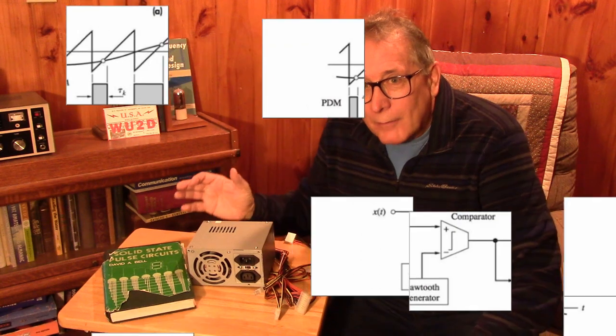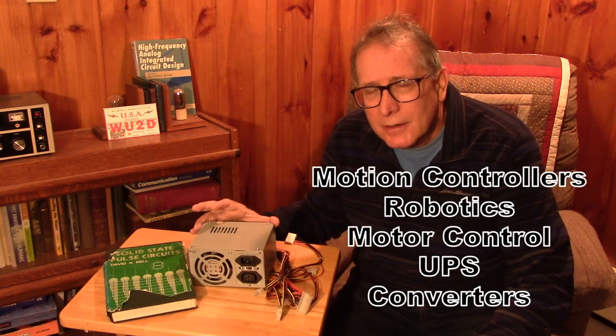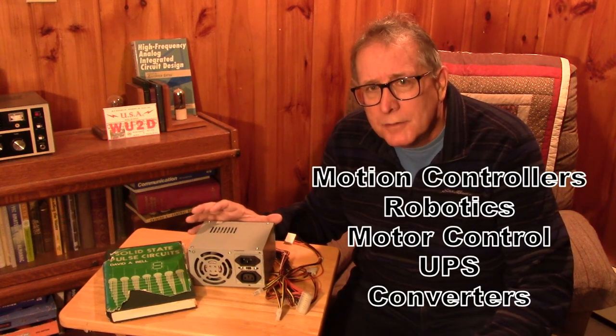That's going to wrap up part one on pulse duration modulation, often called pulse width modulation. Remember that just about every computer power supply, every UPS, every charger, every plug-in charger for your phone, just about everything you can think of that has to have high-efficiency power conversion uses pulse duration modulation in some way. We're going to use it to make an AM modulator, a high-efficiency way of producing good quality AM.